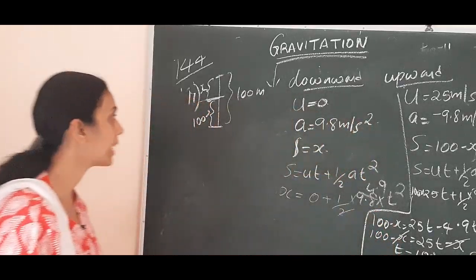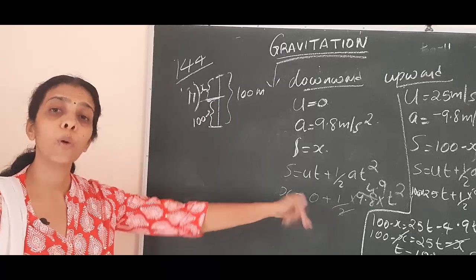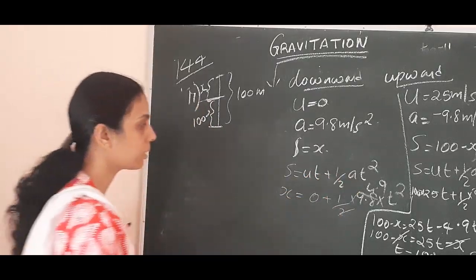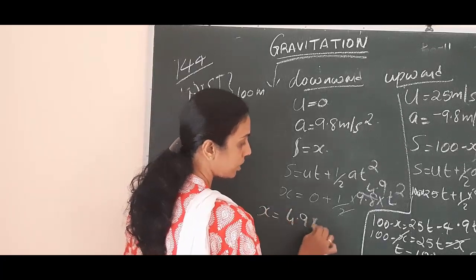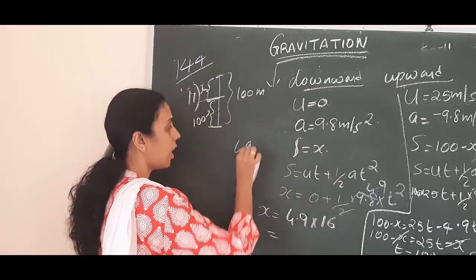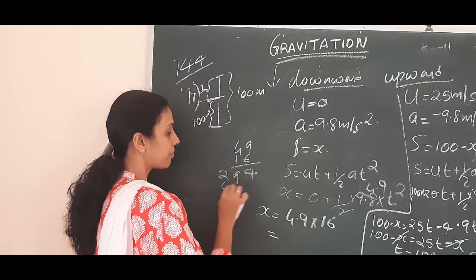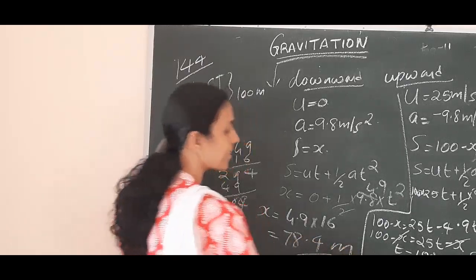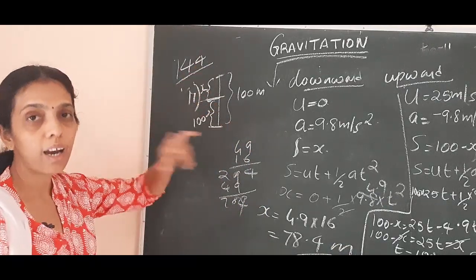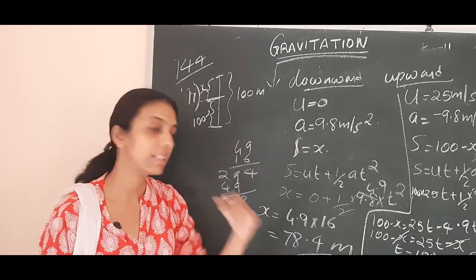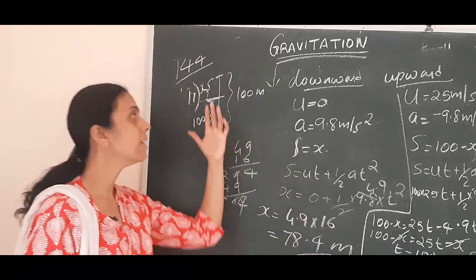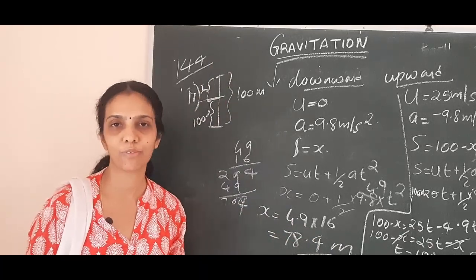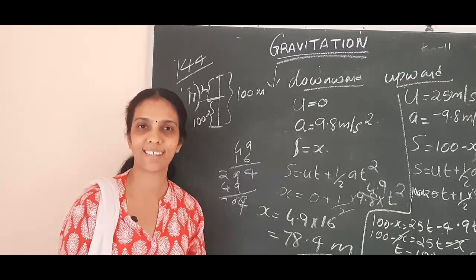So t equals 100 divided by 25, that is equal to 4 seconds. Both stones will meet after 4 seconds. Now for position: x equals 4.9 into t square equals 4.9 into 16, which gives 78.4 meters. So the two stones meet at a distance of 78.4 meters from the top, which means 100 minus 78.4 equals 21.6 meters from the ground.